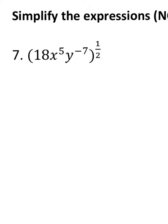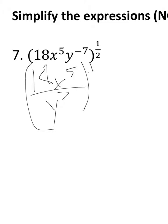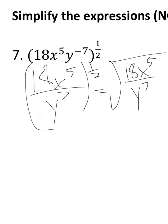Looking at number 7, you have 18x^5 times y^(-7), so really just y^7 in the denominator, and it's raised to the 1/2 power. I think it's easier to explain if I write it as a square root function, since 1/2 power is the same thing.